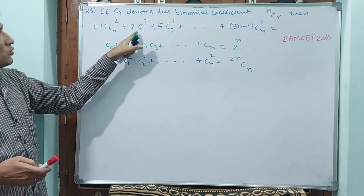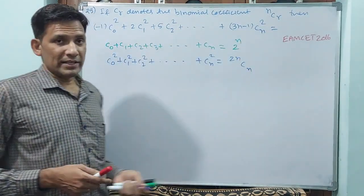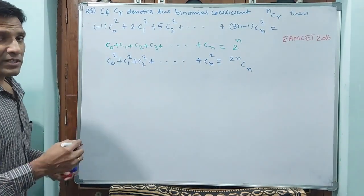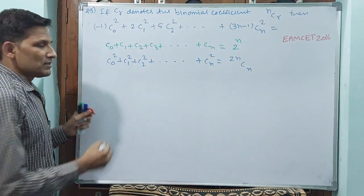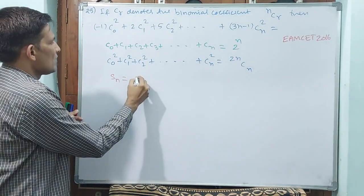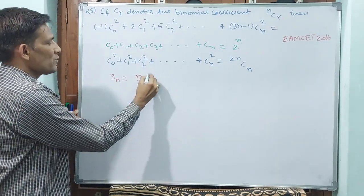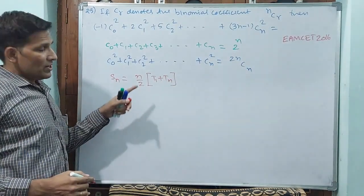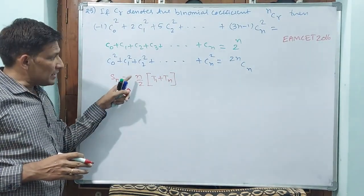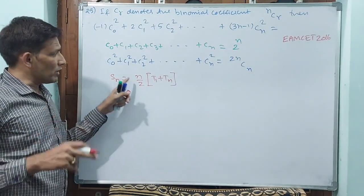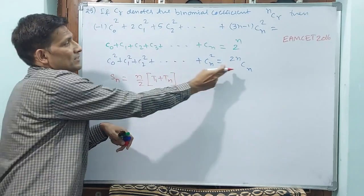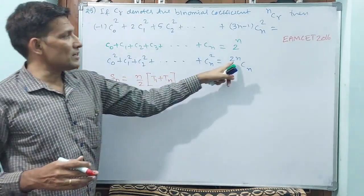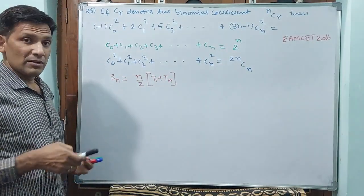Observe: C0 squared, C1 squared, C2 squared up to Cn squared — addition is there. Think of it like arithmetic progression: first term and last term. SN equals N by 2 into first term plus last term. For binomial, the N is replaced with 2N_Cn, first term plus last term divided by 2. If C0 squared is there, write 2N_Cn with N plus half, because it is a binomial.